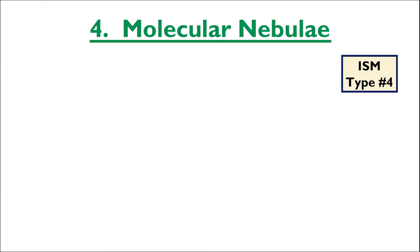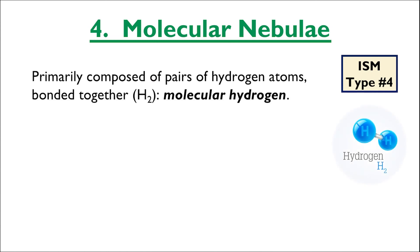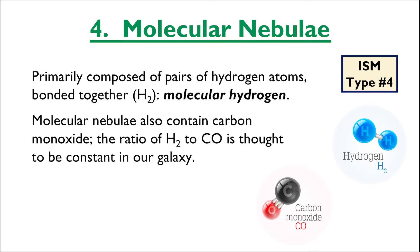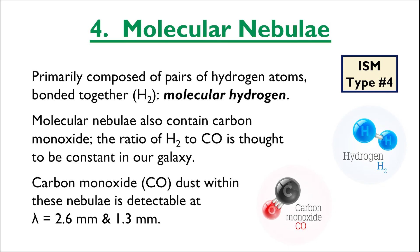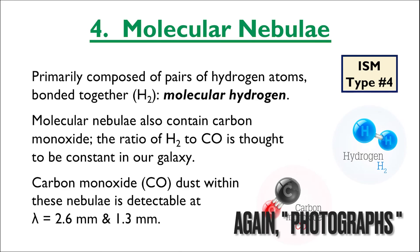The last type of ISM we'll focus on in this video is the molecular nebula. Molecular nebulae are primarily composed of pairs of hydrogen atoms bonded together — molecular hydrogen. Molecular hydrogen does not emit any visible light of its own, so we have to find other means of detecting it. Thankfully, there is a decent amount of carbon monoxide in these molecular nebulae as well, and the ratio of carbon monoxide to molecular hydrogen is thought to be constant in our galaxy. We can detect carbon monoxide at two distinct wavelengths: 2.6 millimeters and 1.3 millimeters.